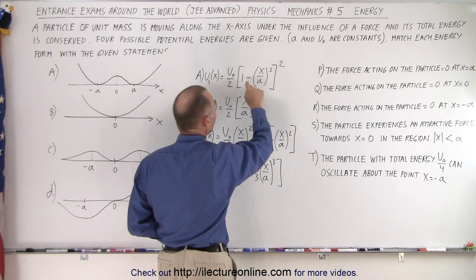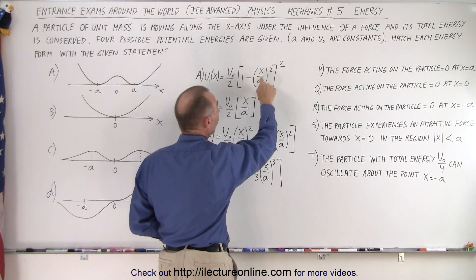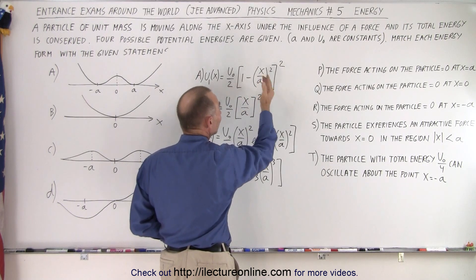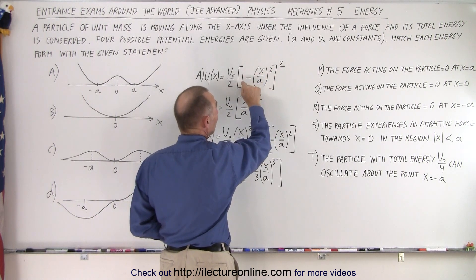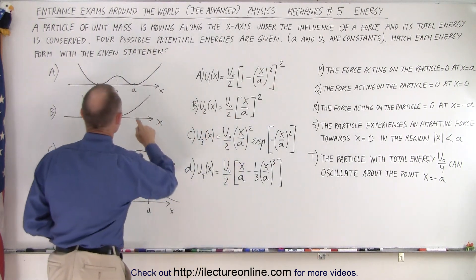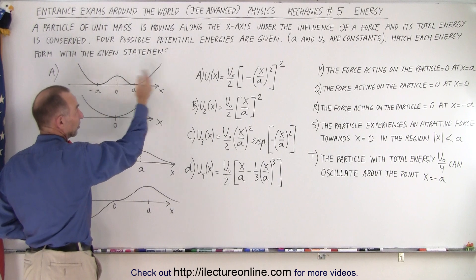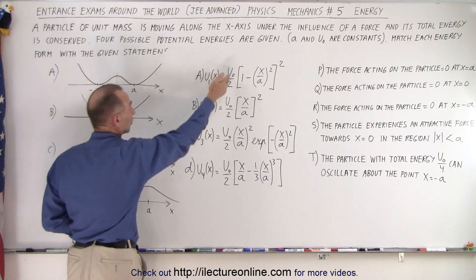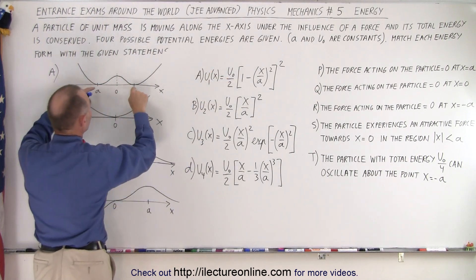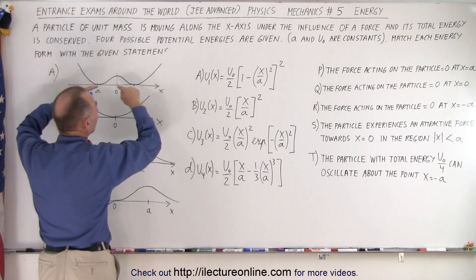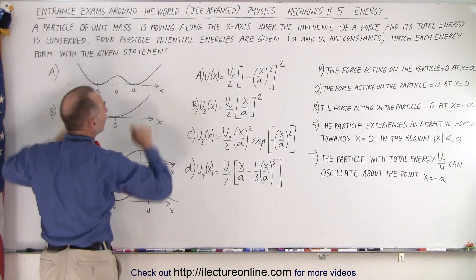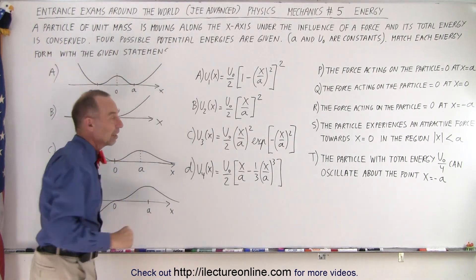If x is 0, this whole thing becomes equal to 1. If x equals a or negative a — it doesn't matter since it's squared — it'll be 1 minus 1, which equals 0. So the function is above 0 at x equals 0, where it equals u sub nought over 2. It is 0 at both a and negative a, and then as x gets bigger, potential energy increases.